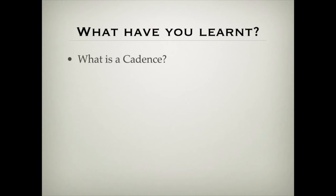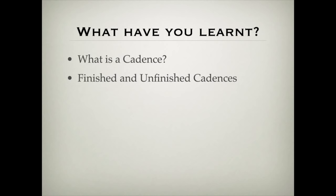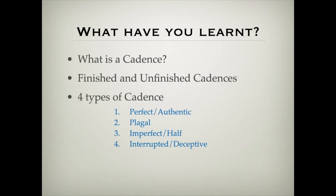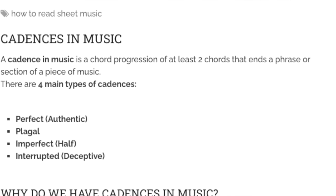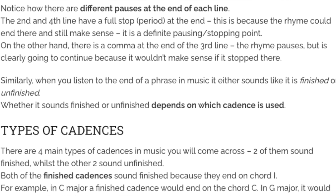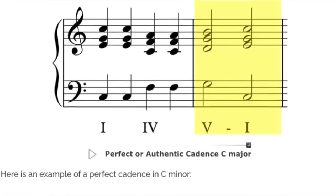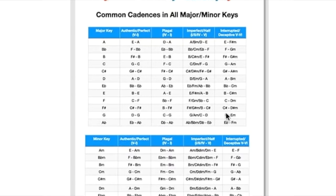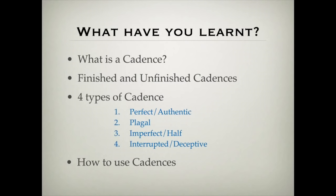So what have we learnt? A cadence is a series of at least two chords that ends a musical phrase. There are finished and unfinished cadences, depending on whether the music sounds like it's going to finish or keep going. There are four types: the perfect/authentic, the plagal, the imperfect/half, and the interrupted/deceptive. If you head over to my site, I've got an article on cadences with lots more information, plus a list of all the different cadences in all the keys — major and minor — that you can download and print off as a reference point when you're composing.